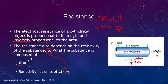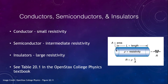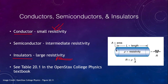Continuing on this topic, we have different types of objects — conductors and insulators. Things with a very small resistivity allow electricity to flow easily; copper, used in wires, has a very small resistivity. An insulator has a very large resistivity and will not allow things to flow very well. We also have semiconductors, which are in between and have an intermediate value. You can look at table 20.1 in the college physics textbook to find values for resistivity if you're trying to calculate one of these.